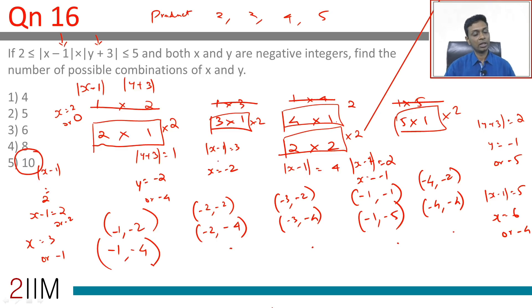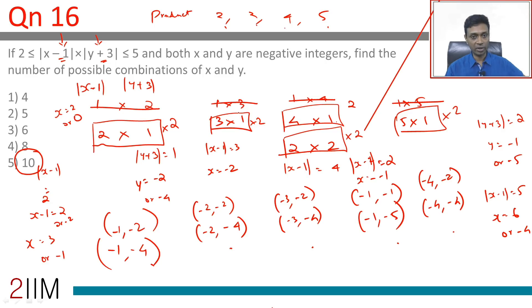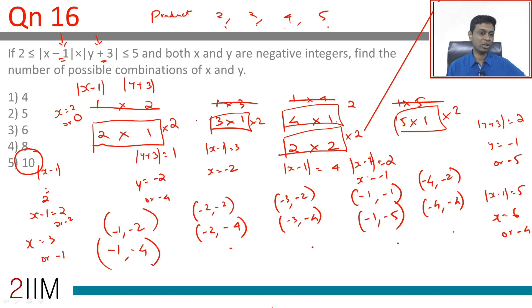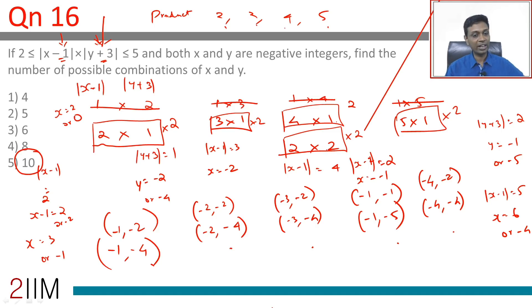The key thing to remember is that we are dealing with negative integers, so |x-1| and |y+3| are positive integers whose product is 2, 3, 4, or 5. We write down all factorizations, eliminate cases where |x-1| = 1 (since those give non-negative x), and for each remaining case find two y-values. A methodical, rigorous approach gives us the answer of 10 combinations.